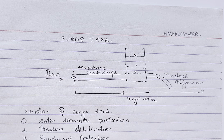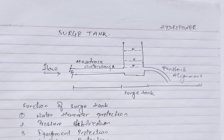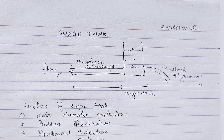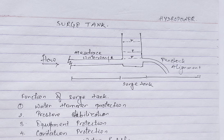The next function is pressure stabilization — by maintaining a consistent pressure and buffering variations caused by demand shifts, pump operation, or valve closure. Next is equipment protection: source tanks protect pumps, valves, and pipelines from potential damage due to pressure surges and water hammer. And next is cavitation protection: by smoothing out pressure fluctuations, source tanks reduce the risk of cavitation, preserving the integrity of equipment.